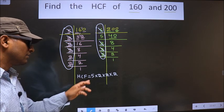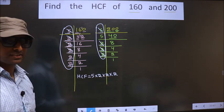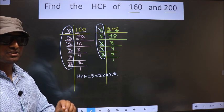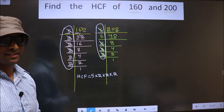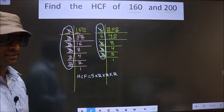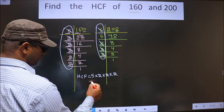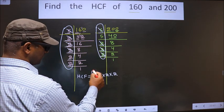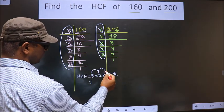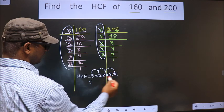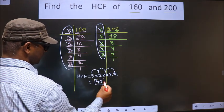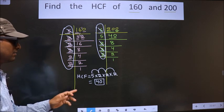So now you multiply these numbers — whatever number you get, that is your HCF. So let us multiply: 5 times 2 is 10, 10 times 2 is 20, 20 times 2 is 40. So the HCF is 40.